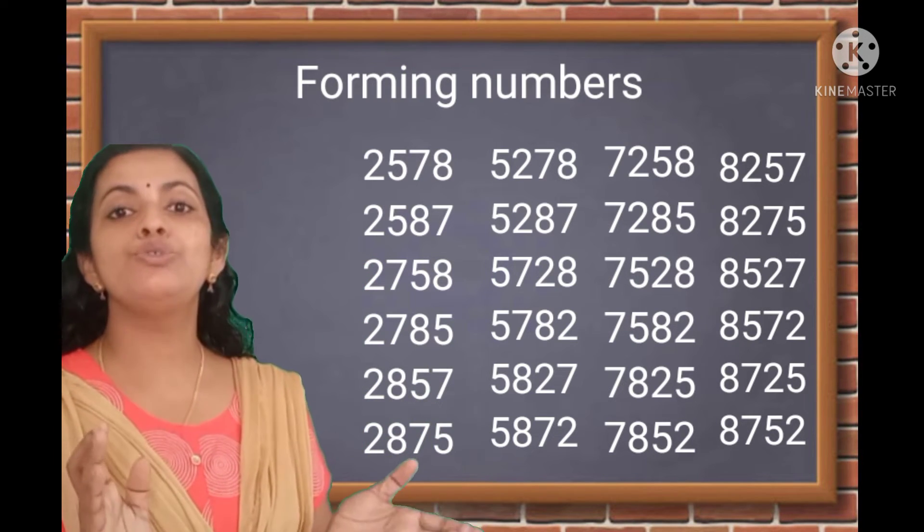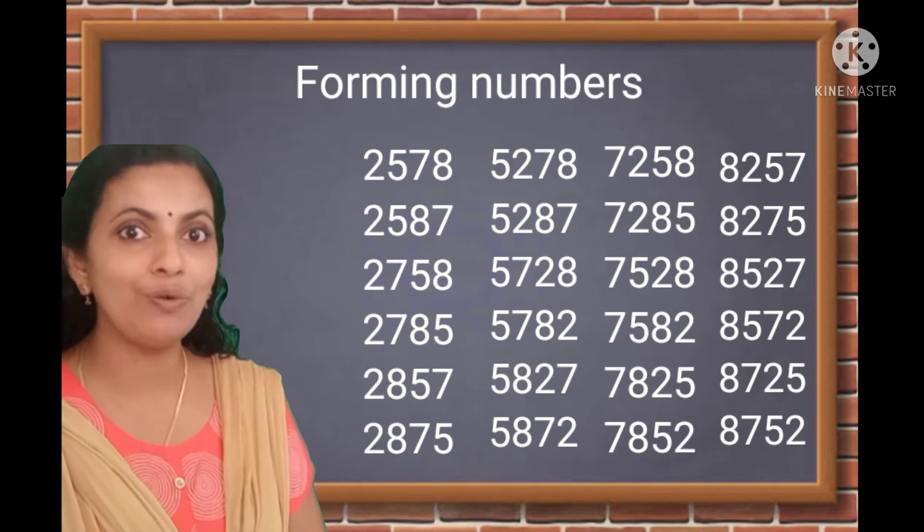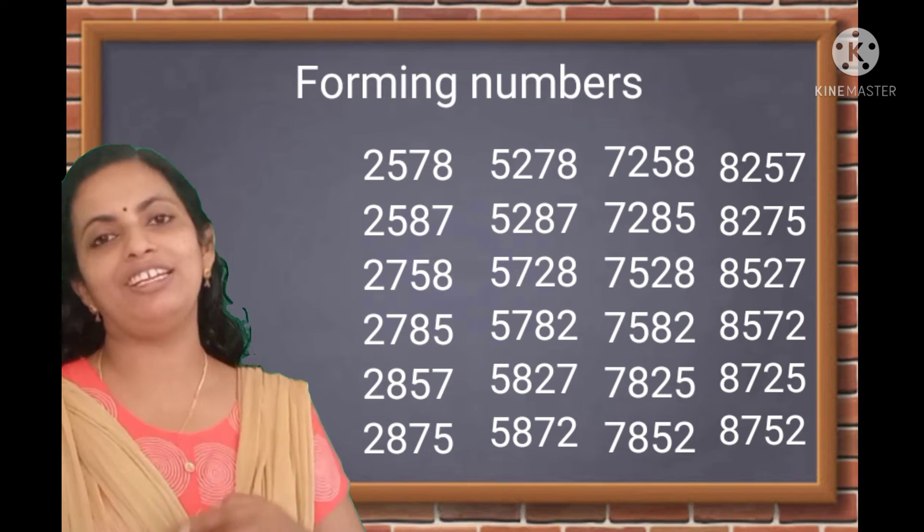Total, 24 numbers. Six fours are 24 numbers we can get using four different digits.